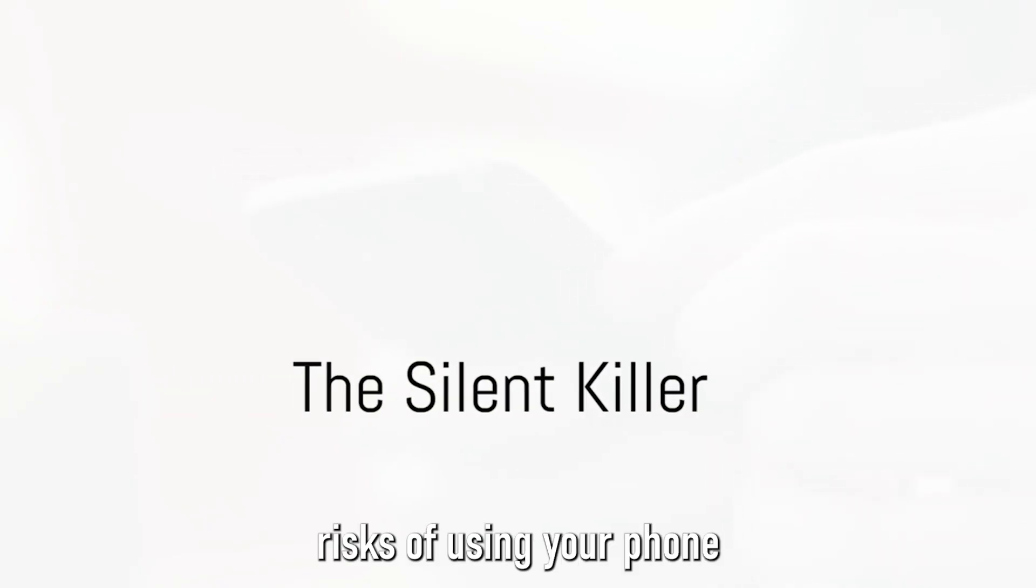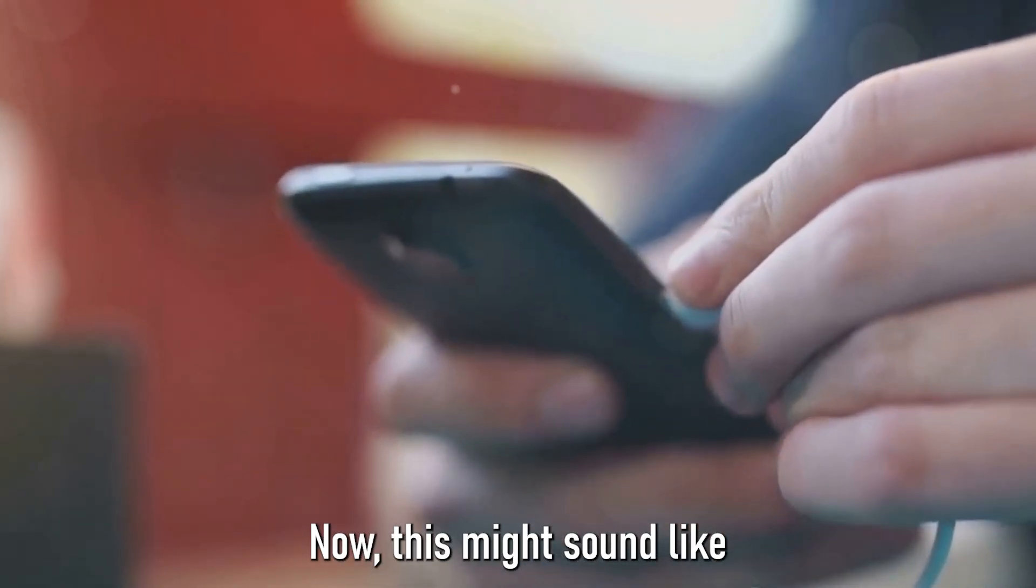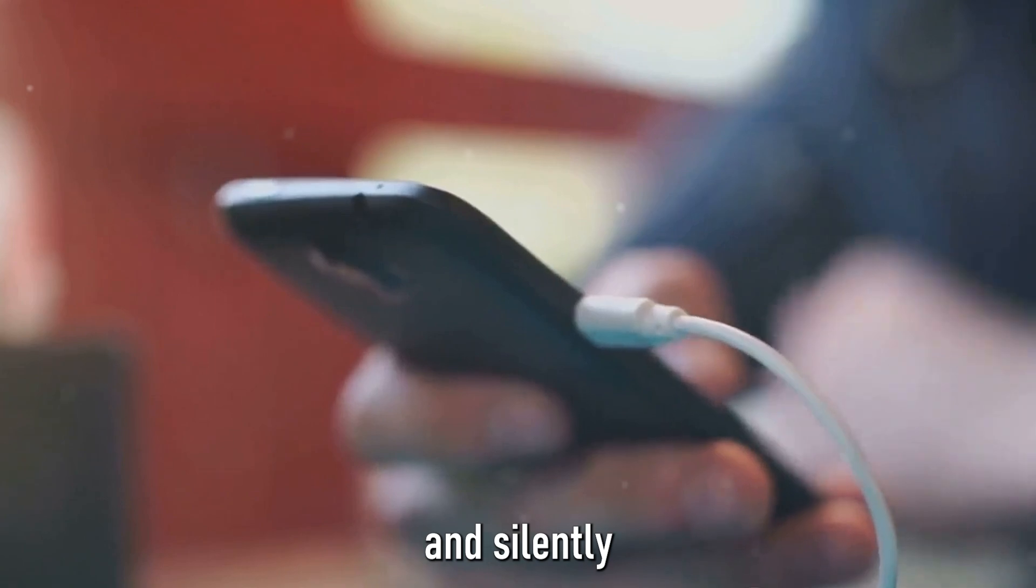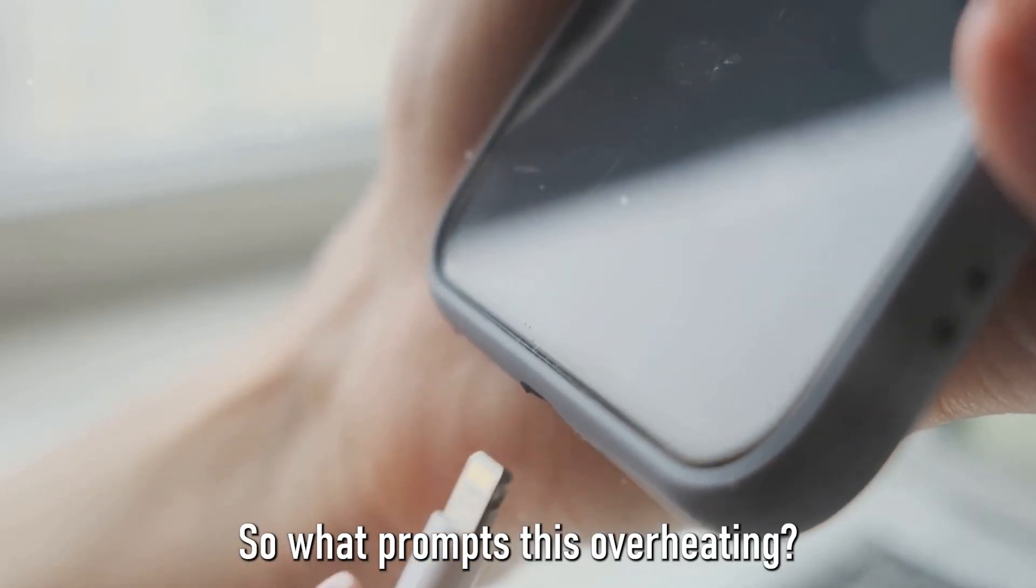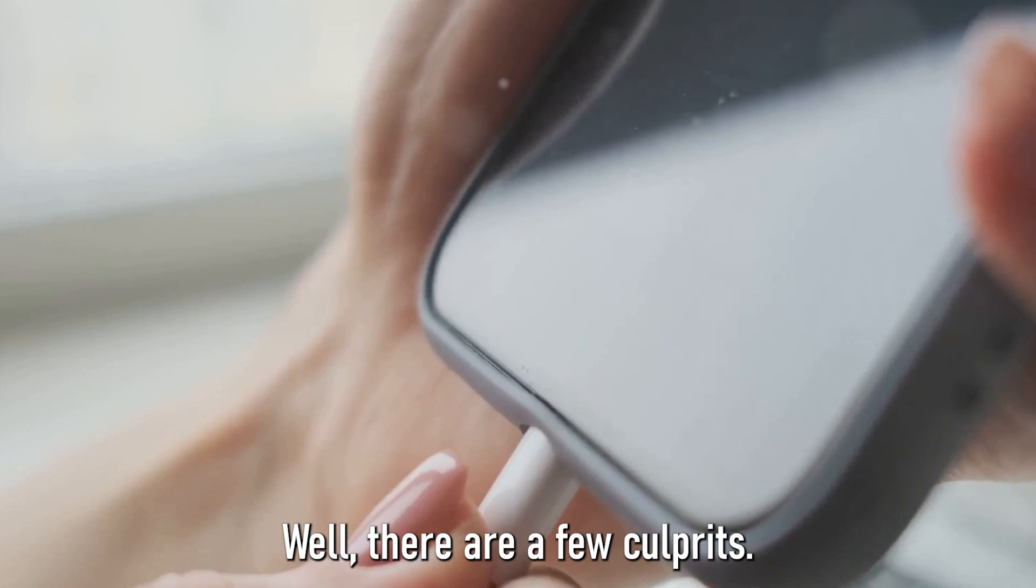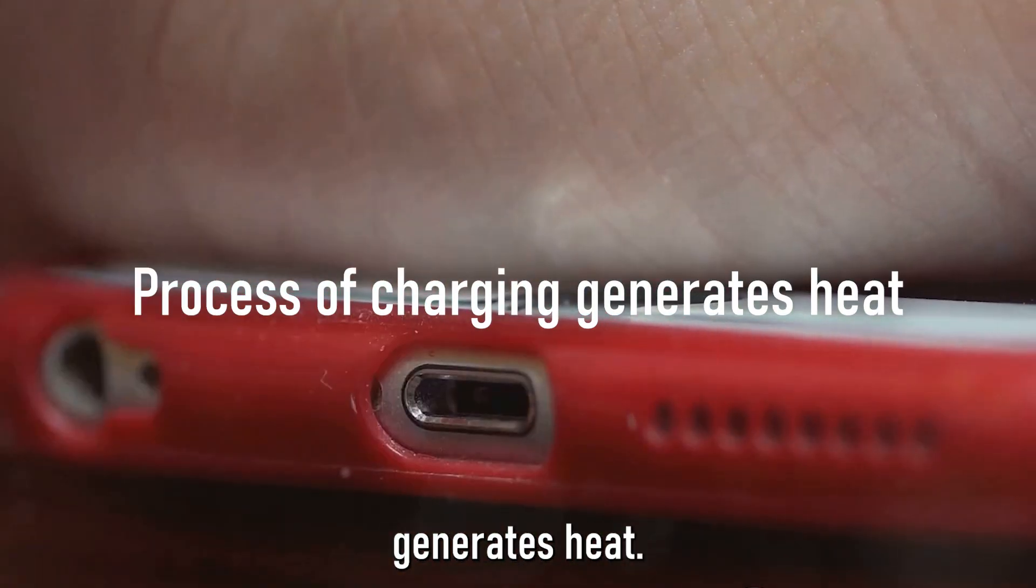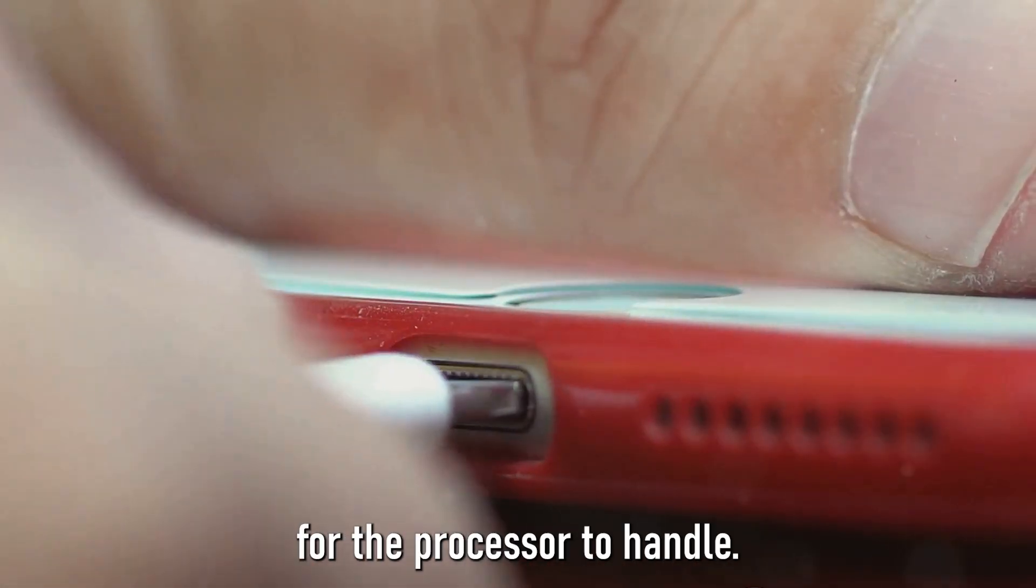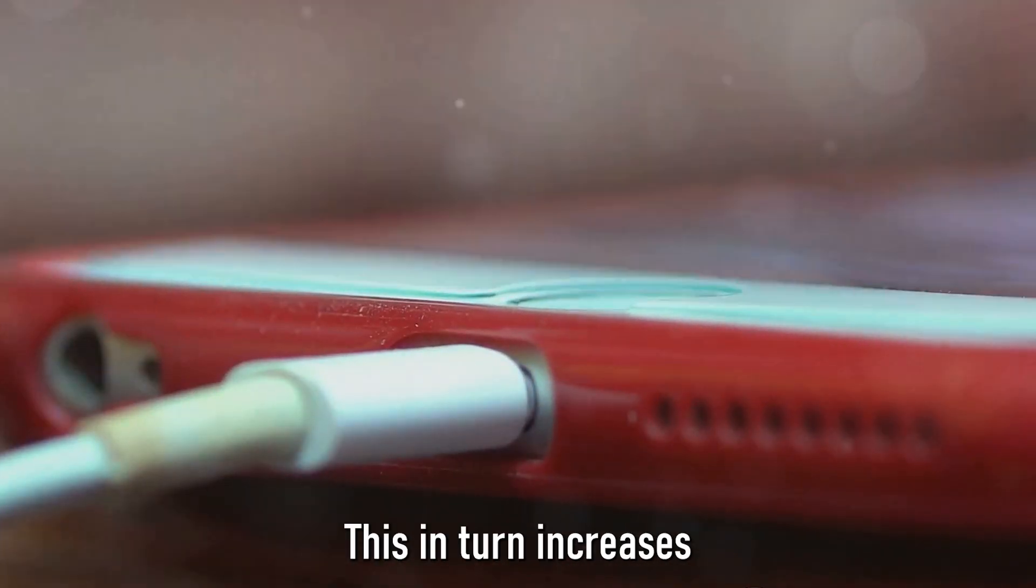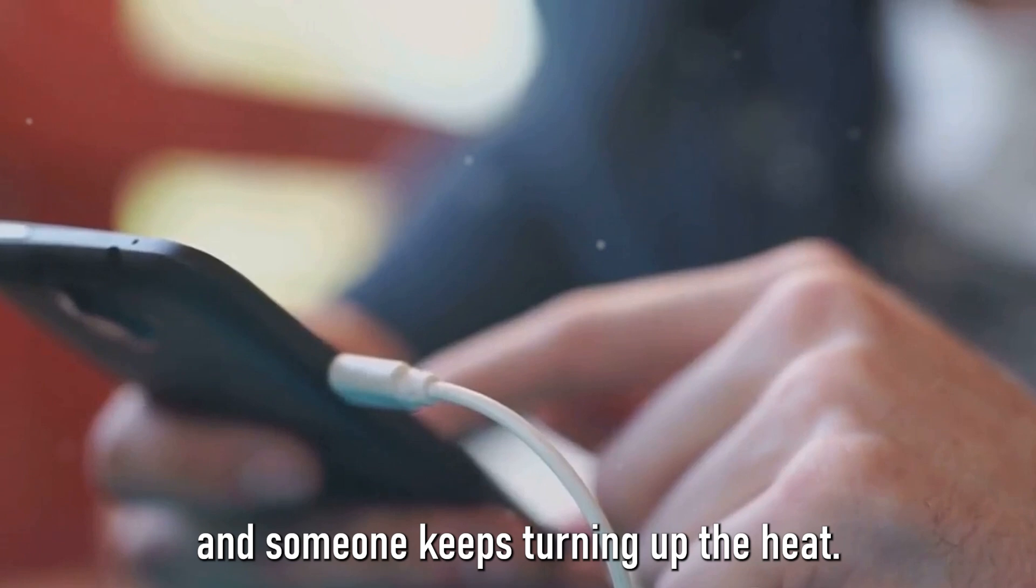One of the major risks of using your phone while charging is overheating. Now, this might sound like an exaggeration, but the danger is very real and silently lurking in the palm of your hand. So what prompts this overheating? Well, there are a few culprits. Firstly, the process of charging itself generates heat. When you use your phone while it's charging, you're adding more tasks for the processor to handle. This, in turn, increases the heat generated. It's like trying to cool down while running on a treadmill and someone keeps turning up the heat.